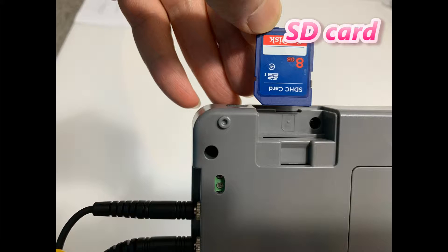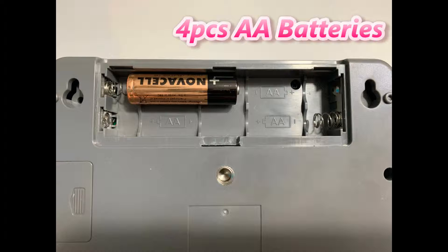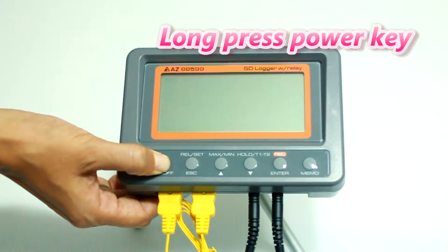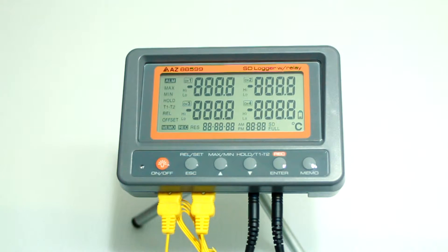Insert probes and make sure the SD card is in place. Install 4 new batteries with correct polarity. Then press the power key for more than 1 second until the display is turned on.